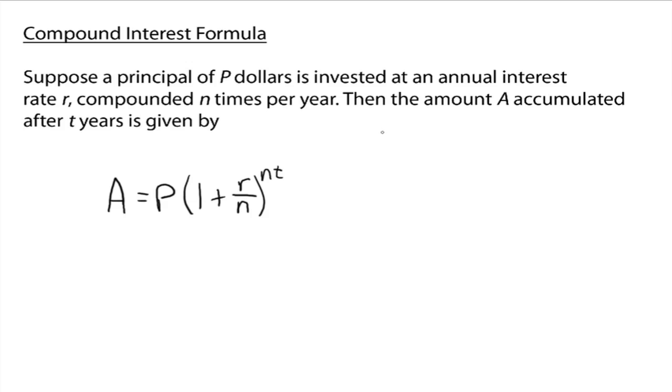Then compounded n times per year, so the number of compounding. So what compounding means is that we stop, calculate the interest, and add it to the account. So for like savings accounts, it's typically at the end of the month, they calculate the interest based on an average daily balance, and then add that interest to your account. And then they do it again the next month. Okay, so it's just once a month. Okay, so compounded n times per year.